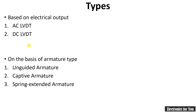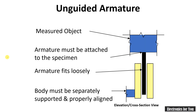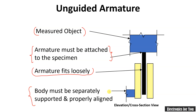Let's see the unguided armature type LVDT first. Here the movable core fits very loosely and no support is provided to the armature — therefore it is called unguided armature type LVDT. The object being measured should be connected to this point. The armature must be attached to the specimen, and the body must be separately supported and properly aligned.